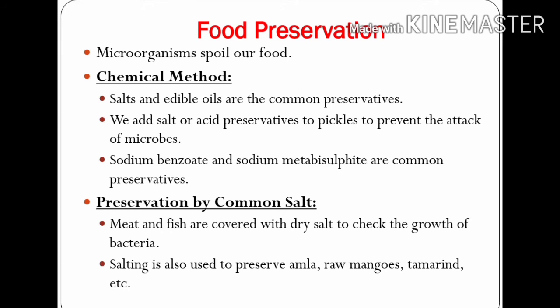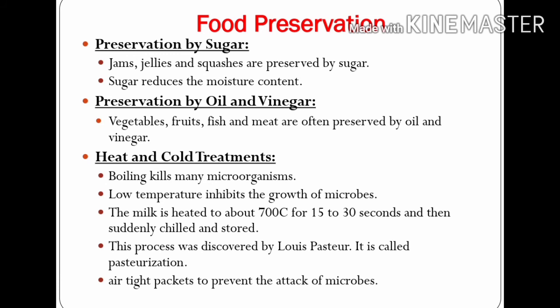Microorganisms are also used for food preservation. Some microorganisms spoil our food, but some can help in preservation. The first method is the chemical method: salt and edible oils are common preservatives. We add salt or acid preservatives to pickles to prevent the attack of microbes. Sodium benzoate and sodium metabisulphite are common preservatives used to store food items for longer periods. Meat and fish are covered with dry salt to check the growth of bacteria. Salting is also used to preserve amla, raw mangoes, tamarind, etc. Jams, jellies, and squashes are preserved by sugar, which reduces the moisture content so they can be stored for longer periods.